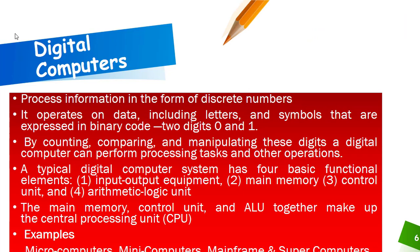The second type is digital computers. Digital computers process information in the form of discrete numbers or binary code, and they operate on data including letters and symbols expressed in the form of binary code — that is zero and one. By counting, comparing, and manipulating zeros and ones, digital computers can perform various processing tasks and operations.